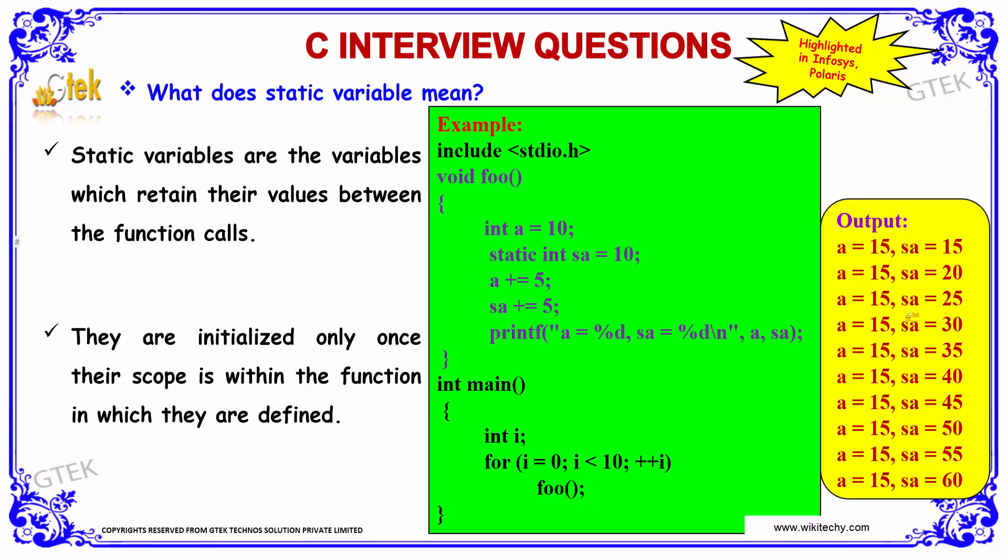Whereas for the static variable, every time the static variable is processed, it is incremented by the value of 5. You can see here sa equal to 15, 20, 25, and it goes on till execution of 10. So this is all about the static variable.